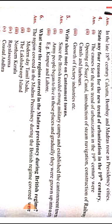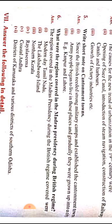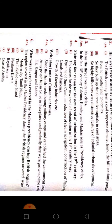What were the regions covered in the Madras Presidency during the British regime? The regions covered were: modern-day Tamil Nadu, the Lakshadweep Islands, north and south Kerala, Rayalaseema coast, Landra district of Karnataka, and various districts of southern Odisha. So read again these two marks.